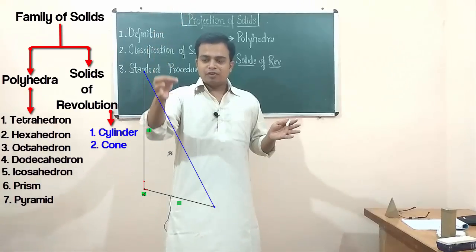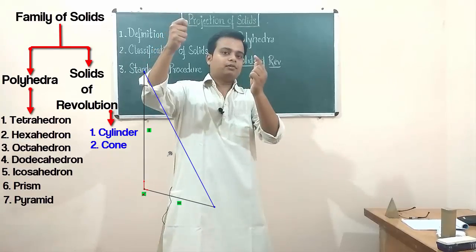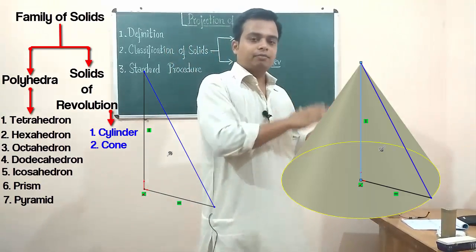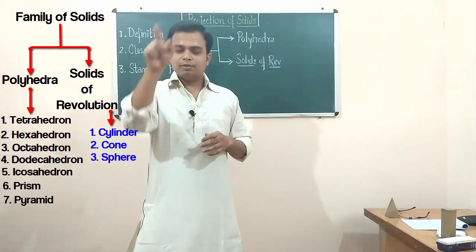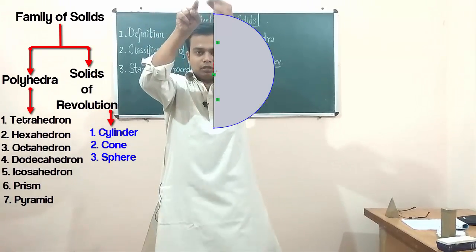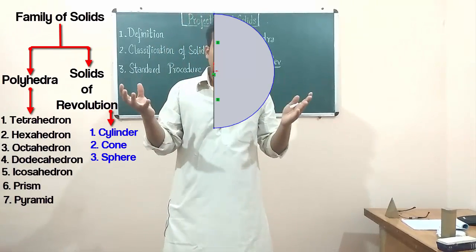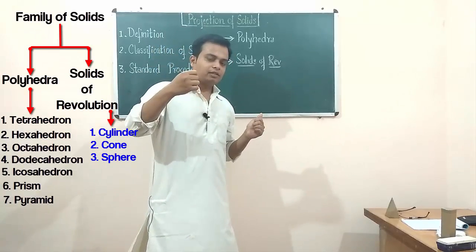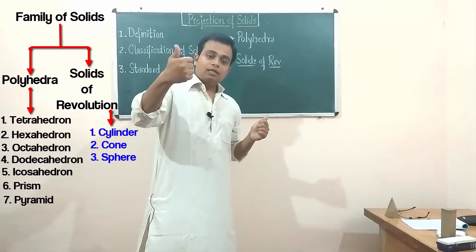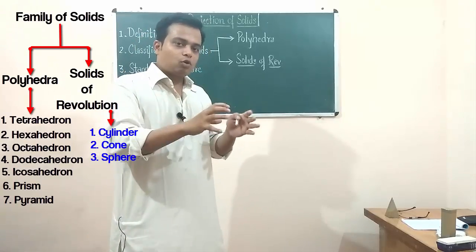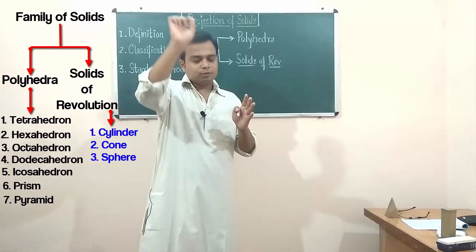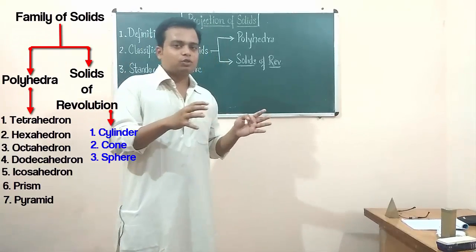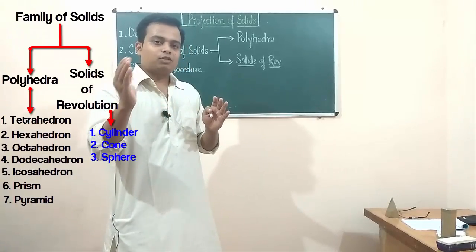The second solid of revolution is a cone. Take a right-angle triangle, fix the perpendicular, and rotate the remaining part — it forms a cone. Then we have a sphere: take a semicircular plane, fix the straight edge, and rotate the rest — it forms a sphere. So we have three solids of revolution: cylinder from a rectangle, cone from a right-angle triangle, and sphere from a semicircle.